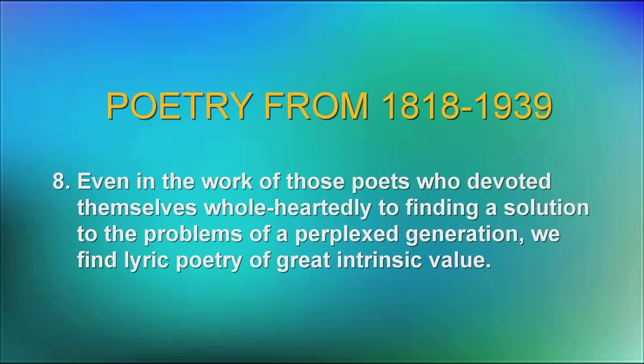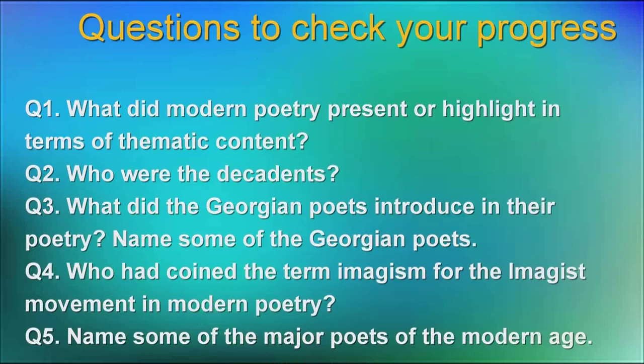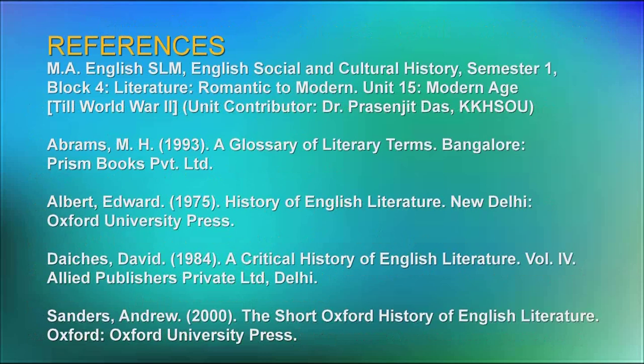This brings us to the questions to check your progress. Question number one: What did modern poetry present or highlight in terms of thematic content? Question number two: Who were the Decadents? Question number three: What did the Georgian poets introduce in their poetry? Name some of the Georgian poets. Question number four: Who coined the term Imagism for the Imagist movement in modern poetry? And question number five: Name some of the major poets of the modern age.